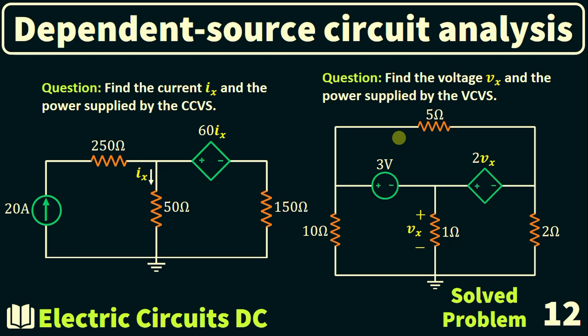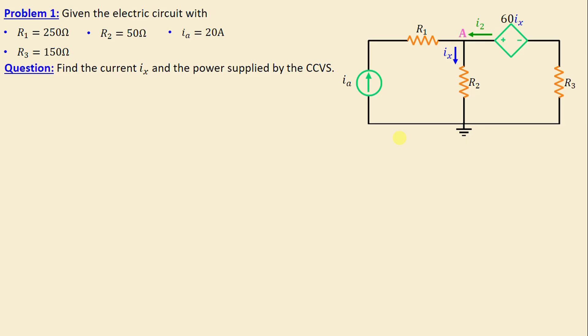Greetings, welcome to this new video about dependent source circuits analysis. We will solve problem number 12. Let's consider this network consisting of three resistors labeled R1 through R3, along with one independent current source Ia. We can also observe the presence of a dependent source, specifically a current controlled voltage source.